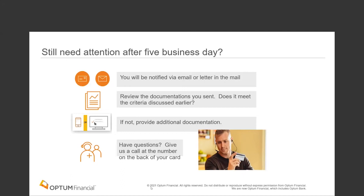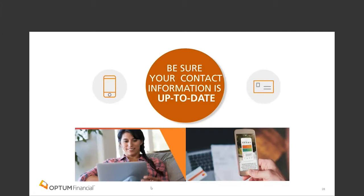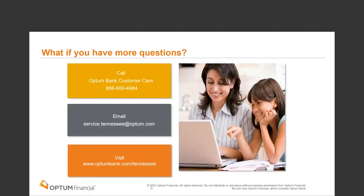Also, since you are notified via email or mailing address about claims, make sure your contact information is up to date. You can make changes on the mobile app or by logging on to OptumBank.com/Tennessee. If updating your mailing address with Optum, also update your employer to ensure the information is correctly passed to us on future files. Contact phone numbers, an email address, and the unique URL OptumBank.com/Tennessee are available — this information will remain on screen during the Q&A session.